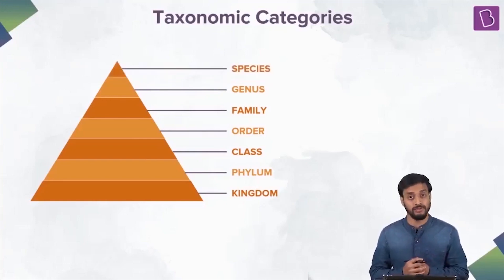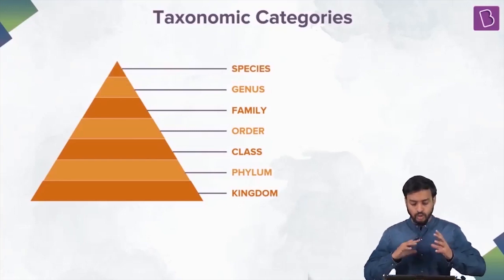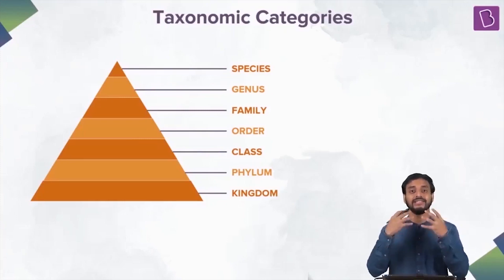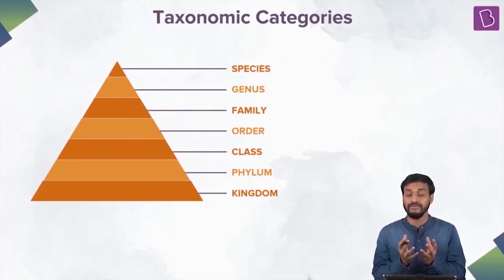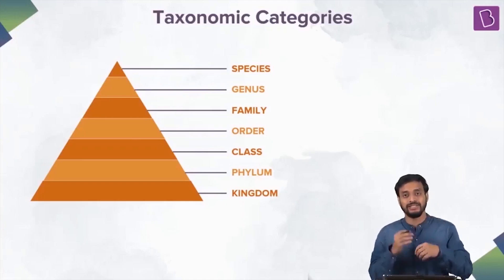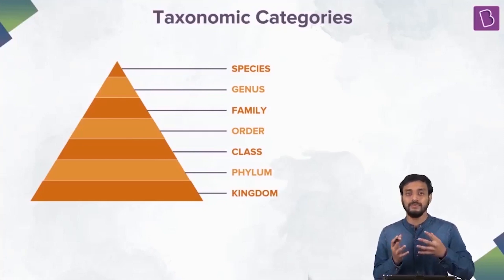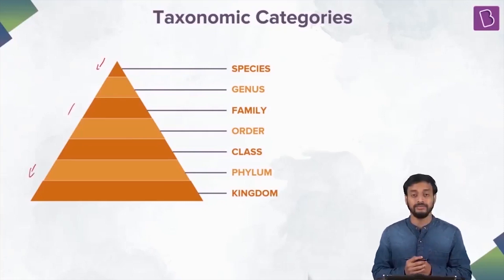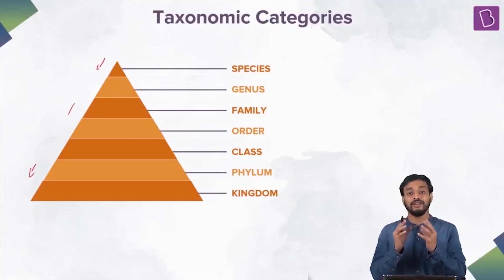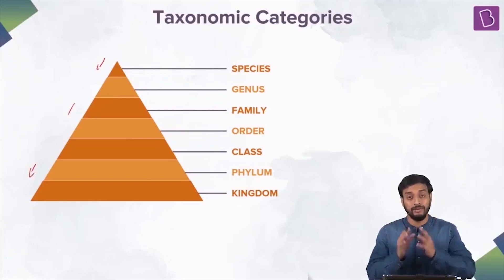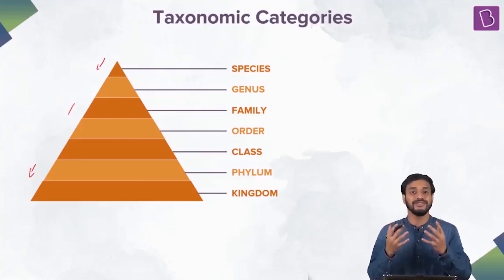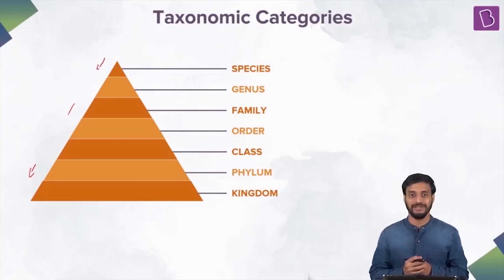Inside the nuclear families are the individuals — that is the species. So there are two ways of representing it. Starting from the highest: country → states → cities → localities → joint families → nuclear families → individuals. Or from the bottom up: an individual is part of a nuclear family; many nuclear families form the joint family; many joint families stay in a particular area; many areas form a city; many cities form a state; many states form a country.